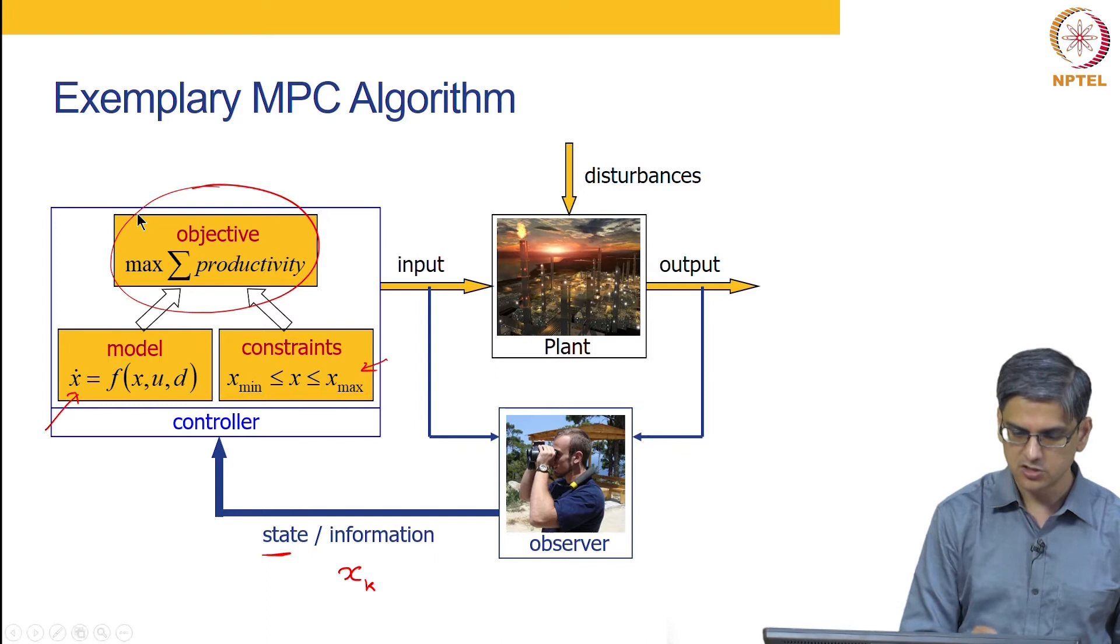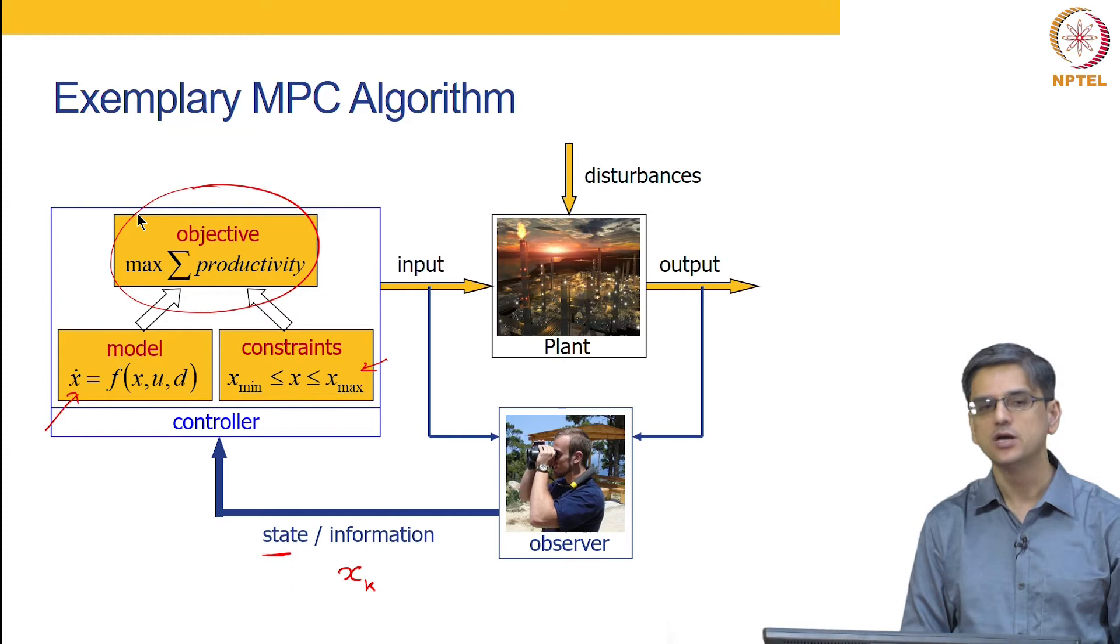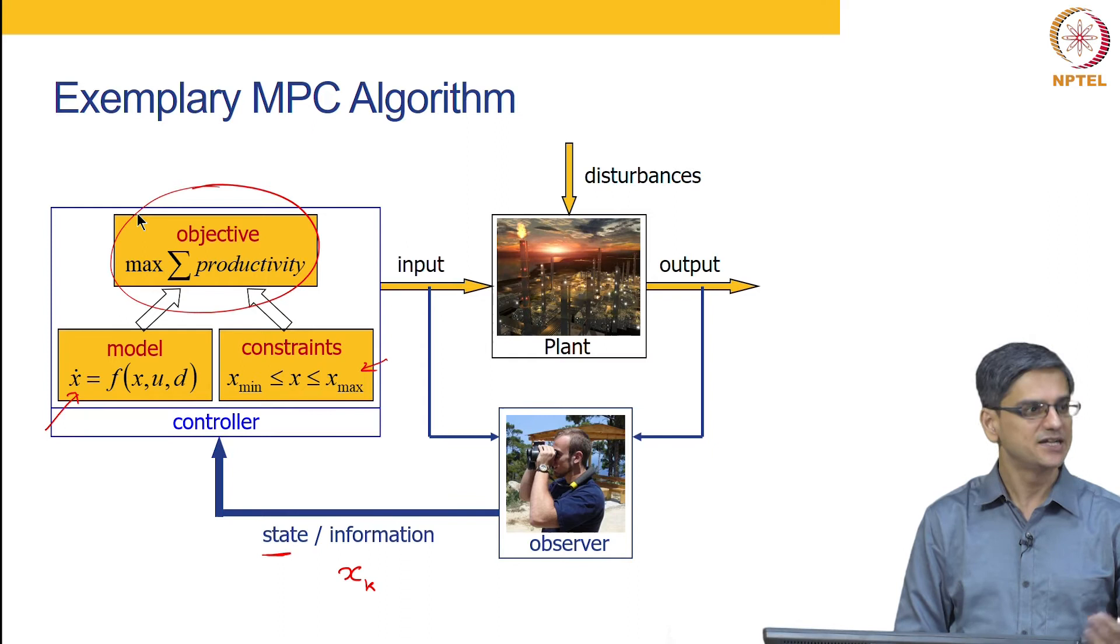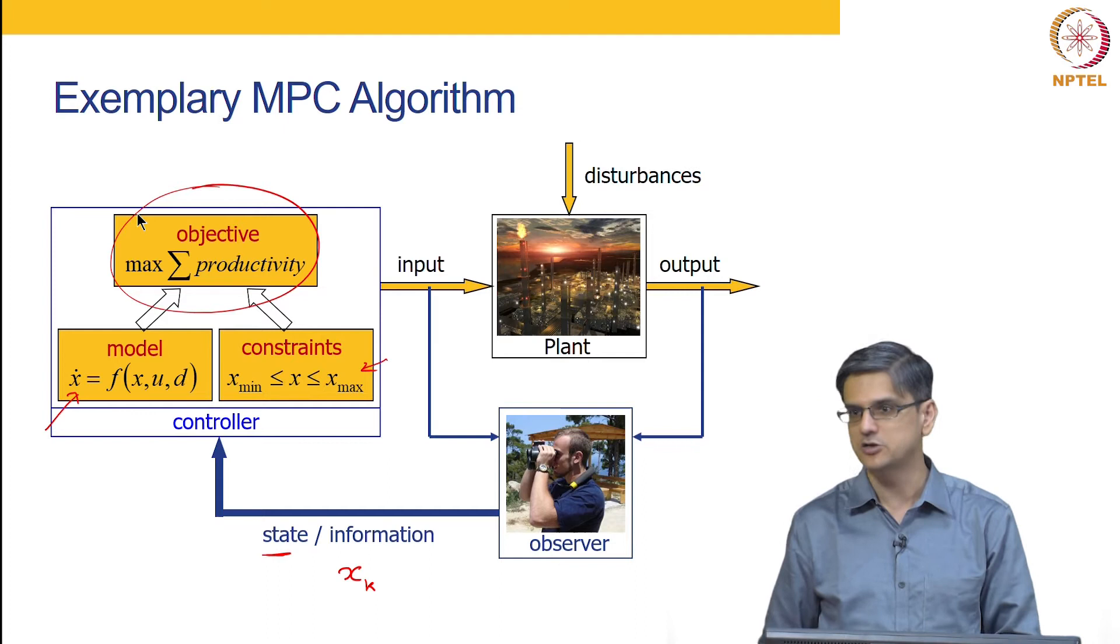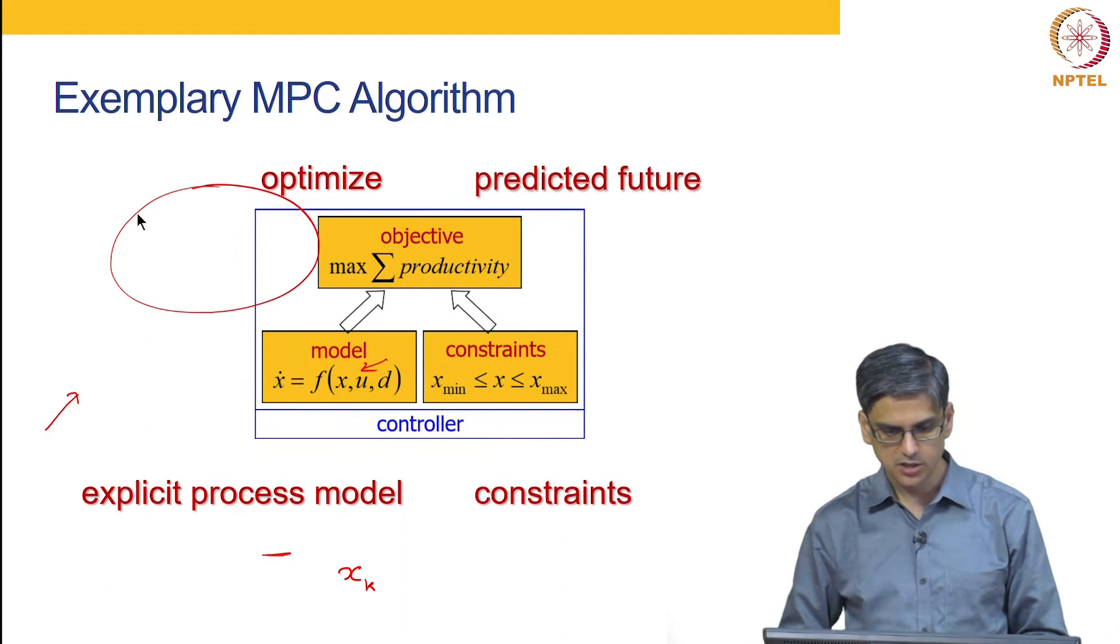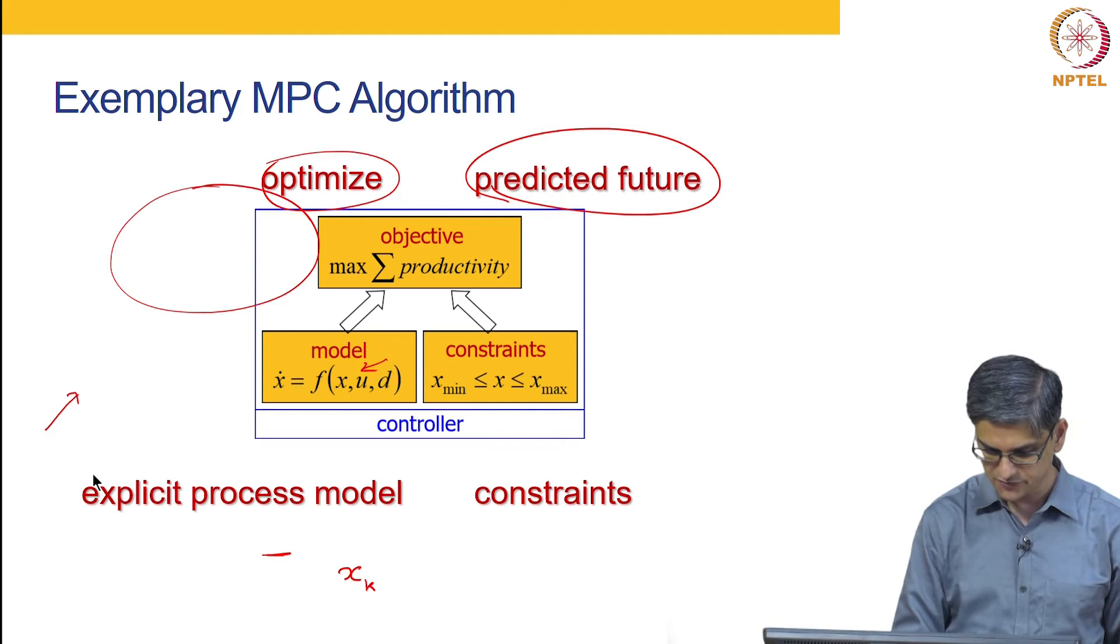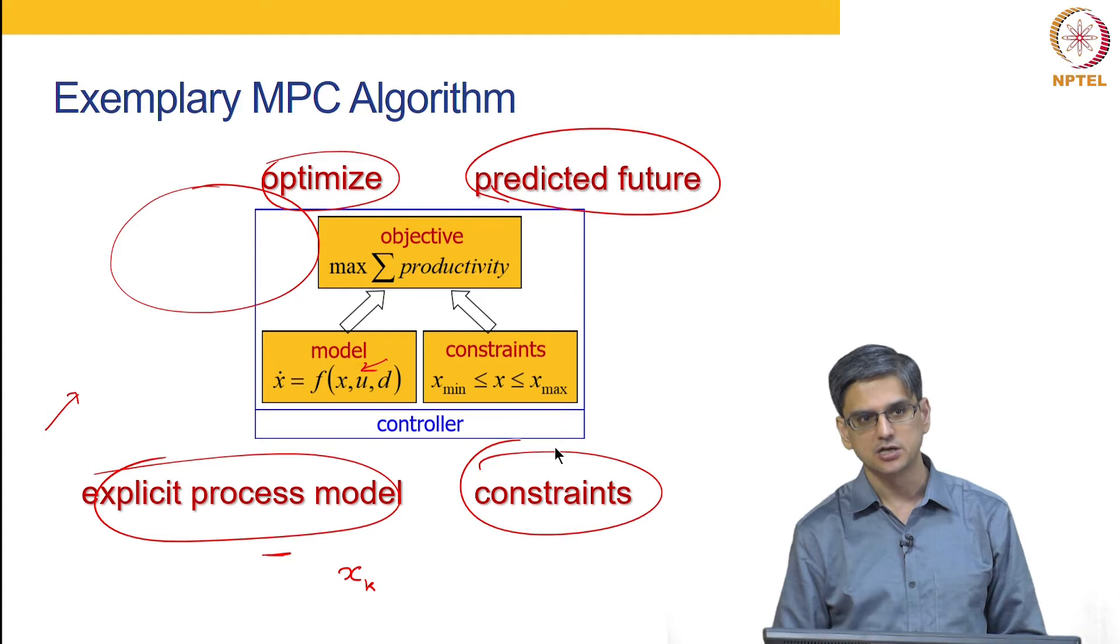These are going to be constraints and there is going to be some kind of an objective function. In the previous set of slides, we saw the objective function to be a quadratic objective function. You are minimizing deviation from set point, but it need not be a quadratic optimization function. It could also be maximizing the productivity of the system. So it could be a linear objective, it could be a non-linear objective, it could be a bilinear objective. The most common is the set point objective which is a quadratic objective. So again let us look at these key words: optimize, predicted future, process model and constraints, which is what you can see in these boxes over here.